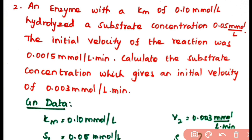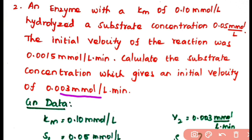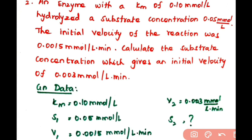Second problem: an enzyme with Km of 0.10 millimolar per liter hydrolyzes a substrate concentration of 0.05 millimolar per liter. The initial velocity of the reaction was 0.0015 millimolar per liter per minute. You have to calculate the substrate concentration which gives an initial velocity of 0.003 millimolar per liter per minute. First, write the given data: Km = 0.10 millimolar per liter.